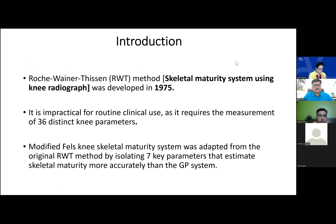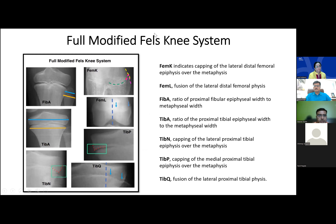The Roche-Wainer-Thissen (RWT) method, developed in 1975, assesses skeletal maturity using knee radiographs but is impractical clinically as it requires measurement of 36 distinct knee parameters. The modified Fells knee maturity system was adapted from RWT by isolating seven of the 36 key parameters, and was found to be more accurate than the Greulich and Pyle bone age atlas system.